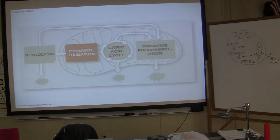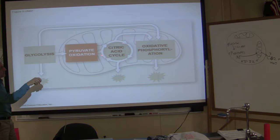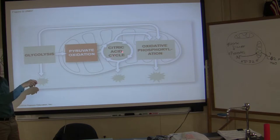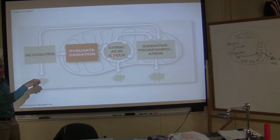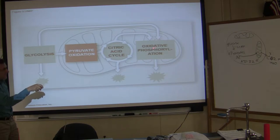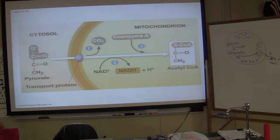Glycolysis occurred in cytoplasm. After glycolysis, pyruvate goes to mitochondria and pyruvate goes through the Krebs cycle — also called the citric acid cycle or tricarboxylic acid cycle, three names for it. And then when the citric acid cycle occurs, oxidative phosphorylation and the electron transport chain will occur.